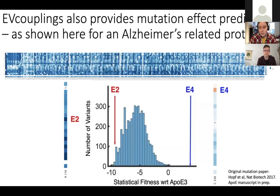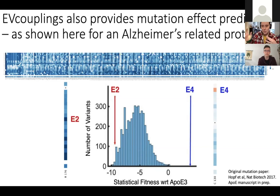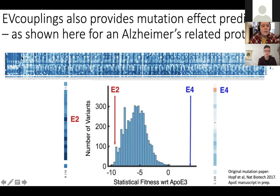Our predictions can go beyond a single structure. For a protein called MERGA, a flippase in the membrane, we thought it adopts open and closed conformations as part of its function. EVcouplings provides support for both structures — not only were we able to say our predictions show at least two separate structures, but we were also able to show exactly how it opens and closes to form two separate 3D folds.